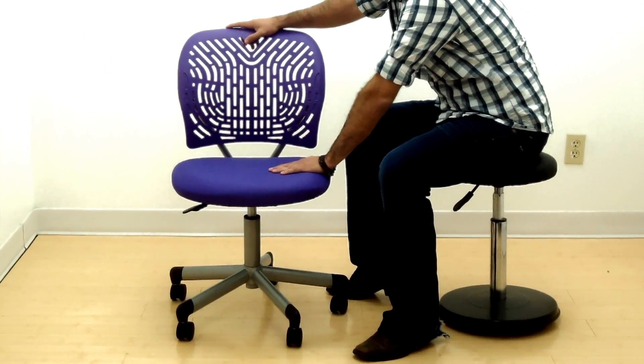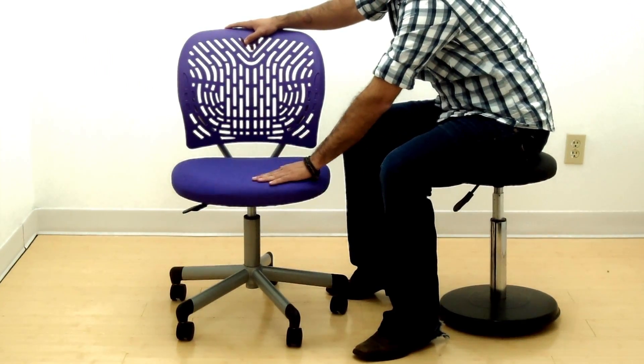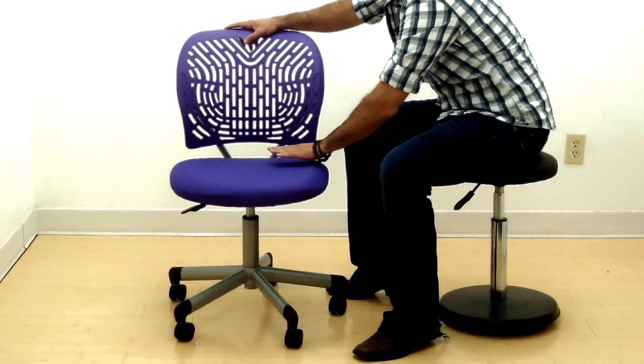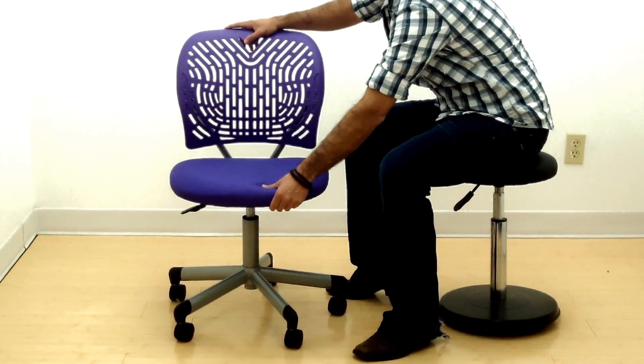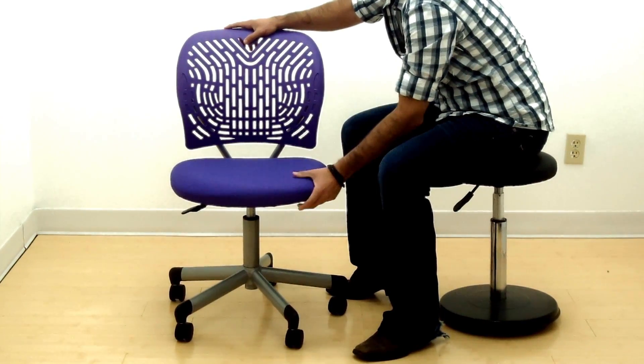This kids task chair has a couple different features which make it a good value. It has easy to clean fabric available in a variety of different colors, with a good size, good thickness padded seat.